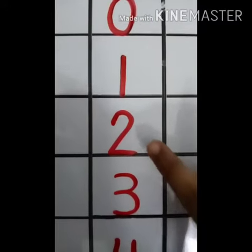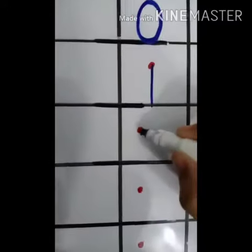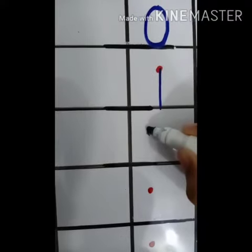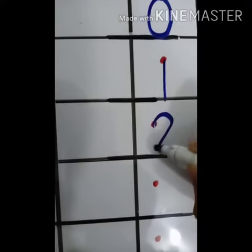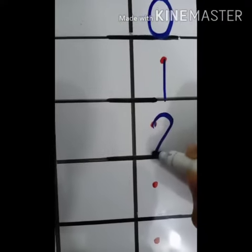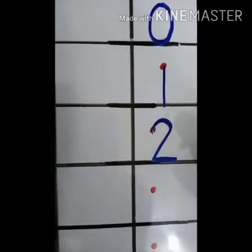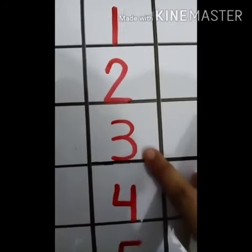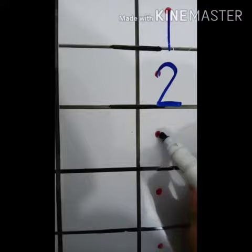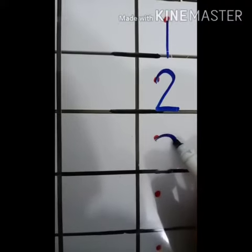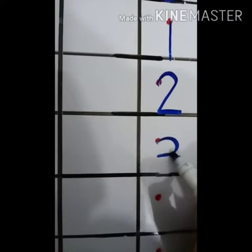Next number two — two is: make a cap, come down and left side, then make a dash. Next number three — three is: make a round and round.